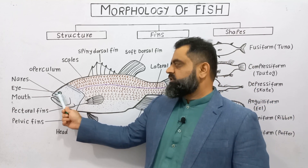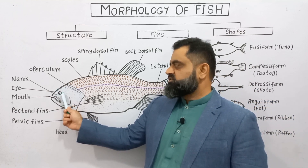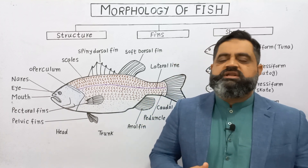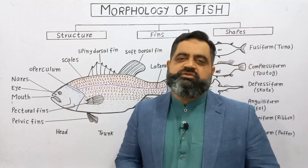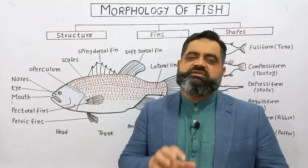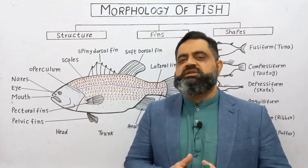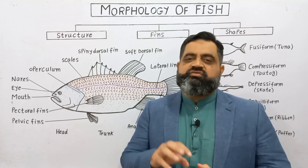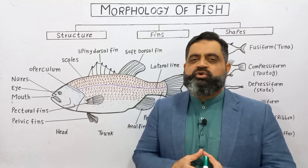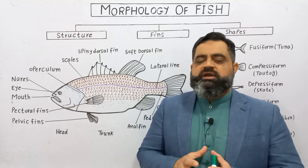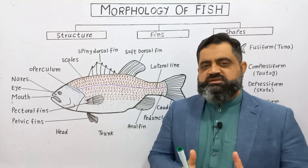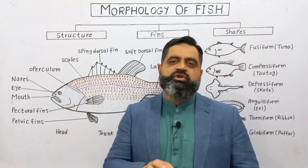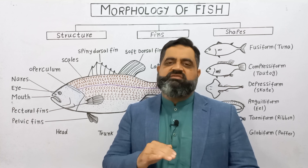Just behind the nares there is a structure known as the eye. The eye is used for vision, but most fishes live in environments where there is little or no light — usually in dark or murky water. So they totally depend on the lateral line system and the nares, which have sensory organs, to navigate in the water.